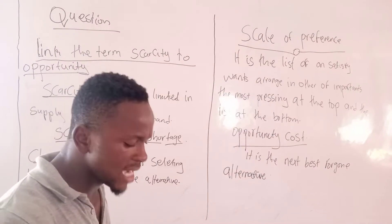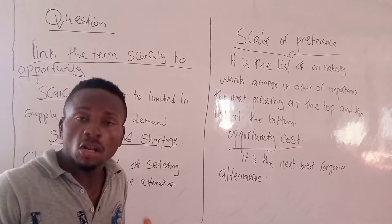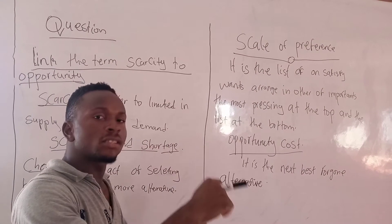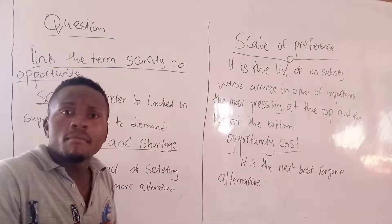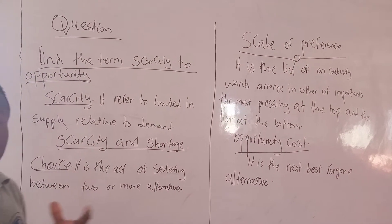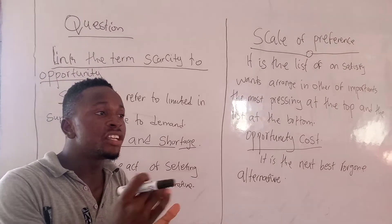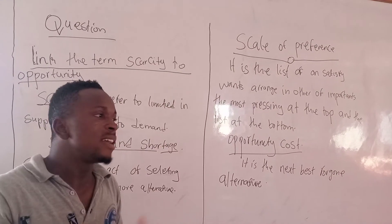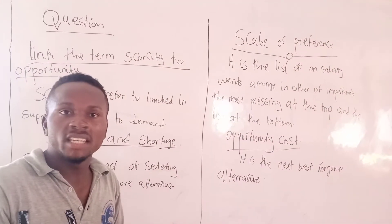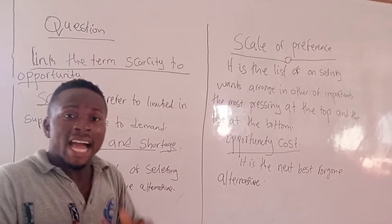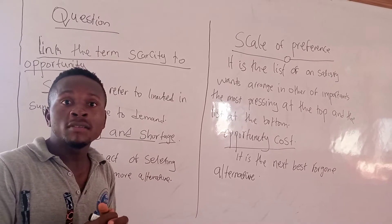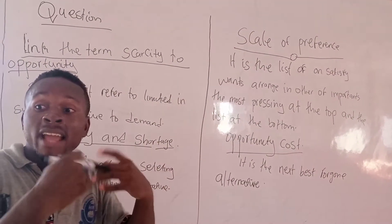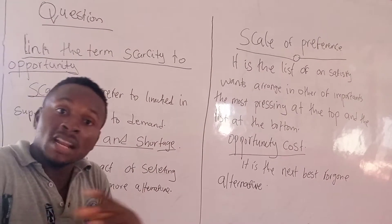You have to understand that scarcity is different from shortage. Scarcity is a permanent situation that affects all economies of the world. Shortage, on the other hand, can be covered up in a short time. For example, if I was selling shoes in the market and they bought all the shoes, but I still have some in the house, we call that shortage. But scarcity means the shoes are completely finished and they are not in the house — the resources are not available at all.